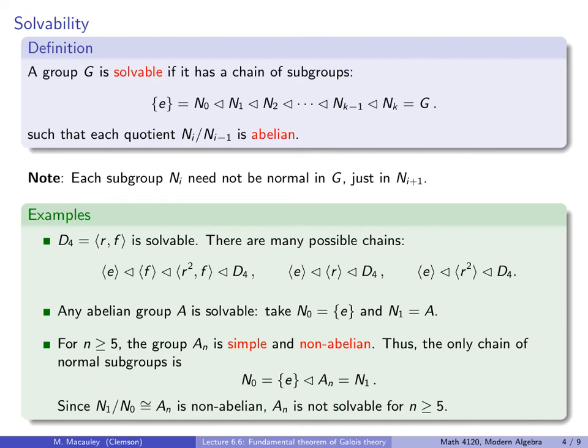Recall on the side of polynomials: polynomials are not solvable by radicals in general if N ≥ 5 — that is not a coincidence. Also recall that A4, which has 12 elements, has a normal subgroup of order 4, so it is not simple and is in fact a solvable group. And on the side of polynomials, every polynomial of degree 4 is solvable by radicals — also not a coincidence. We'll learn more about this connection in the remainder of the lecture.